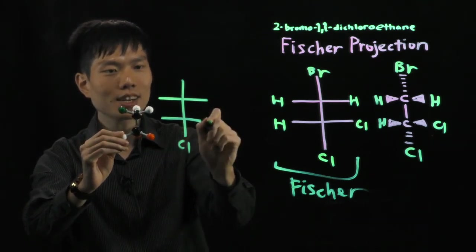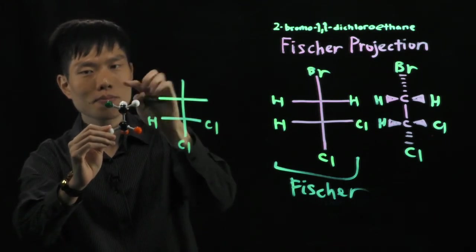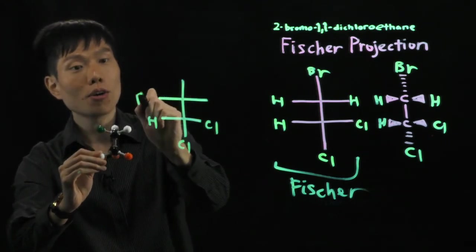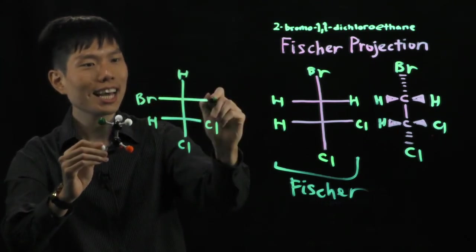Chlorine, right? At the back. Side, chlorine. Hydrogen by the side, on the left. Here, you have a bromine. Top, which is at the back. Hydrogen. And, hydrogen.